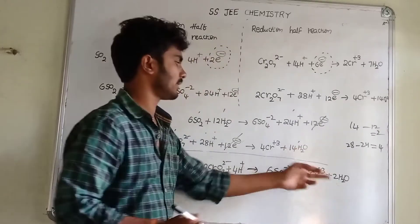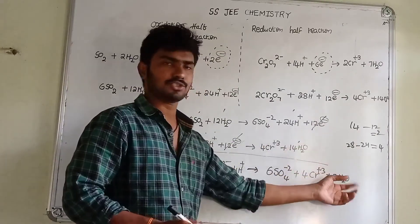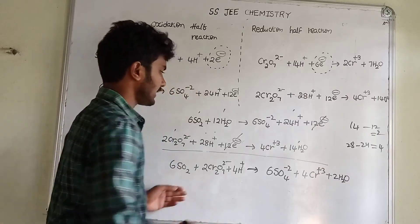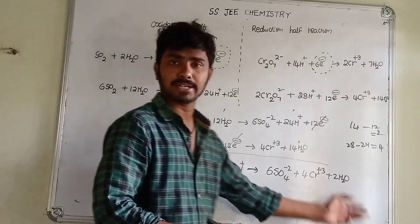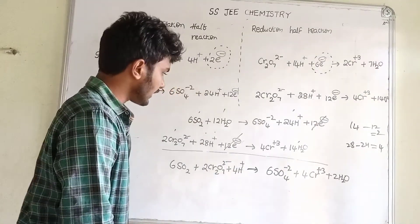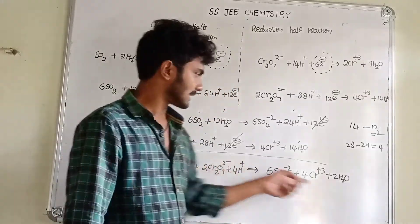So this is our final equation: 2Cr2O7²⁻ reacts with SO2 to give the products. Here is the complete balanced redox equation.